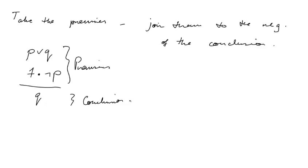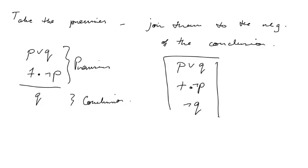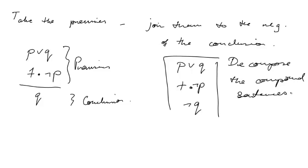We list the premises and the negation of the conclusion, and they're all falling in the same path. Then we decompose the complex sentences, the compound sentences. We're going to apply the tree rules to each of the operators that we have in the compound sentences.